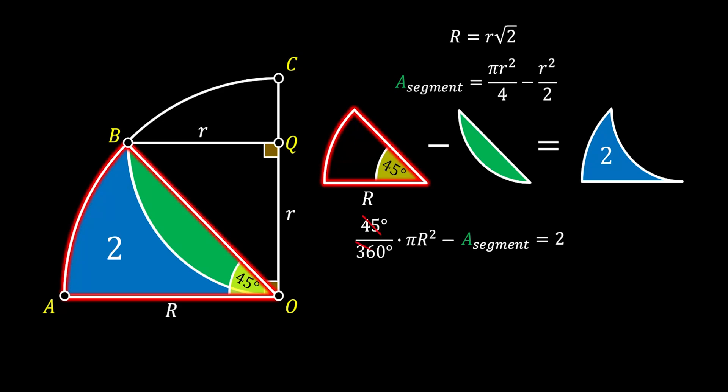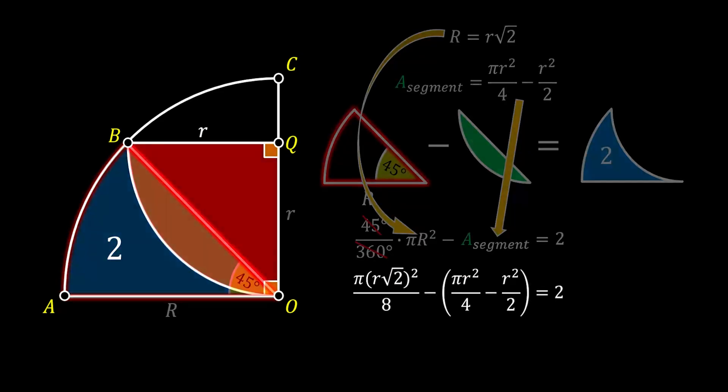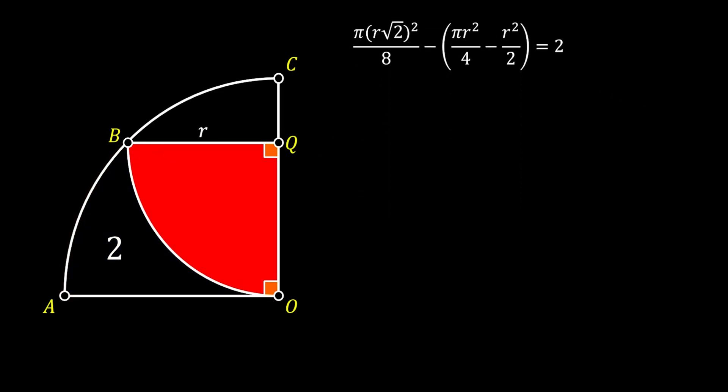Now we can simplify 45 and 360 and we can substitute the value of capital R. Also, we will substitute the value of our segment which we got earlier. If we do this, we will get the following equation. Now let's work through this equation. First we are going to simplify the first term and get rid of the brackets and we will get the following. Then we will simplify the first term once more and we will get the following equation. Here you can clearly see that the first and the second term are completely identical only with different signs. So we can easily cancel them out and we will get that r squared over 2 is equal to 2.